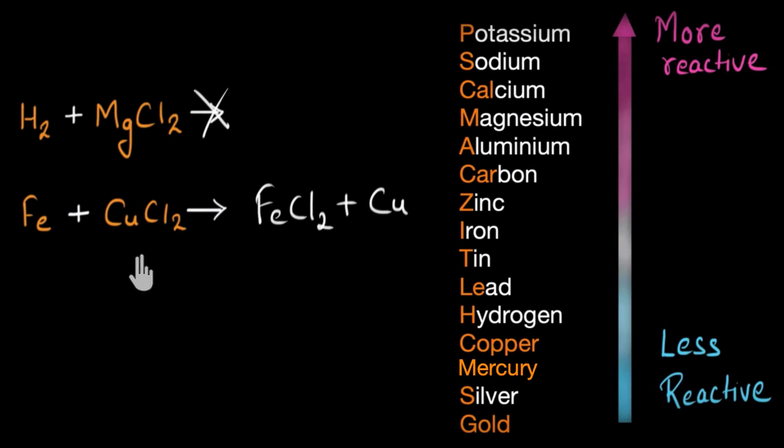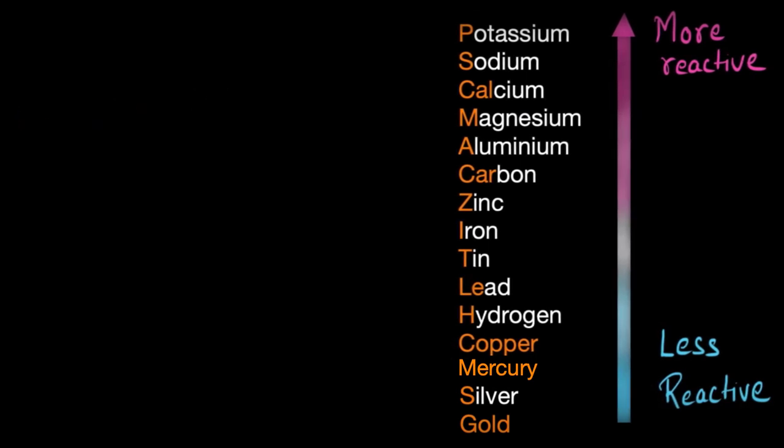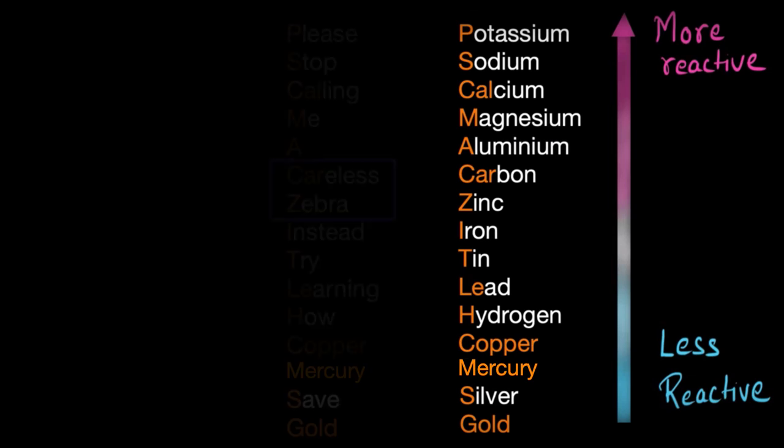But now, let's try to see how we can remember this long list. For this, I have a mnemonic, the careless zebra mnemonic. It goes something like this: Please stop calling me a careless zebra. Instead, try learning how copper mercury save gold.